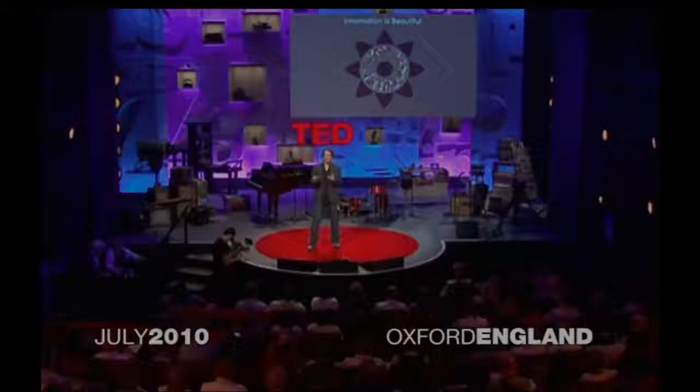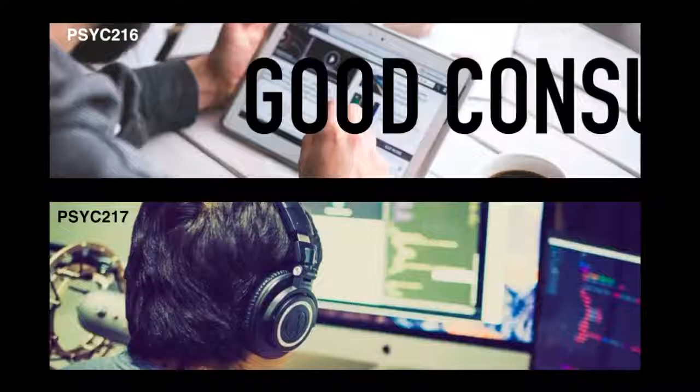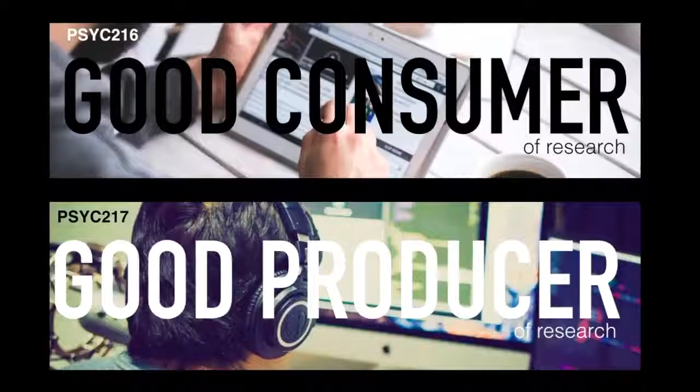Psych 216 is specifically designed for non-majors, with the goal of teaching students to be good consumers of psychological research. Psych 217 is designed to teach psych majors how to be good producers of psychological research.